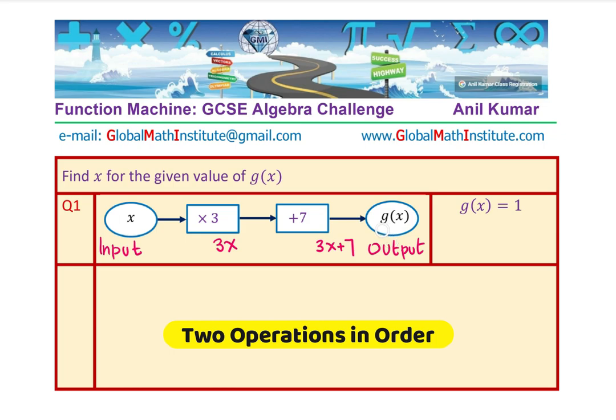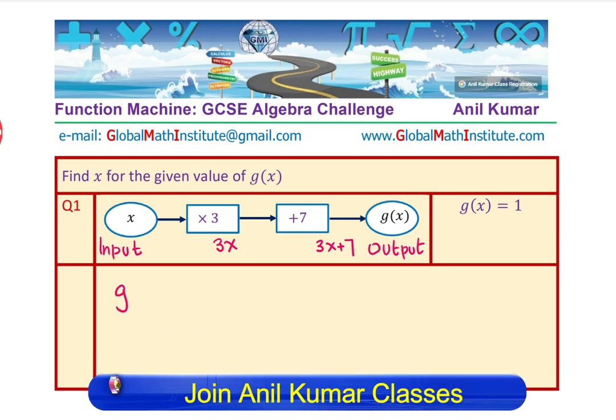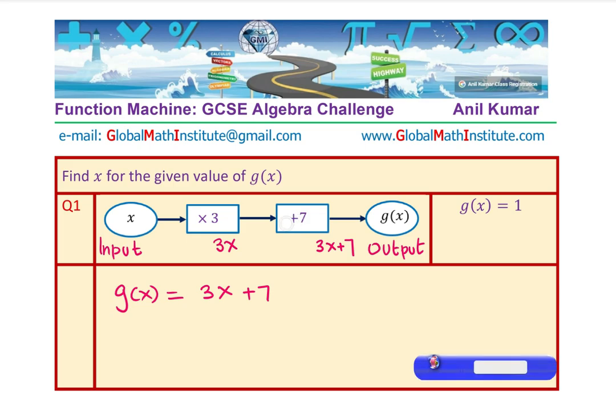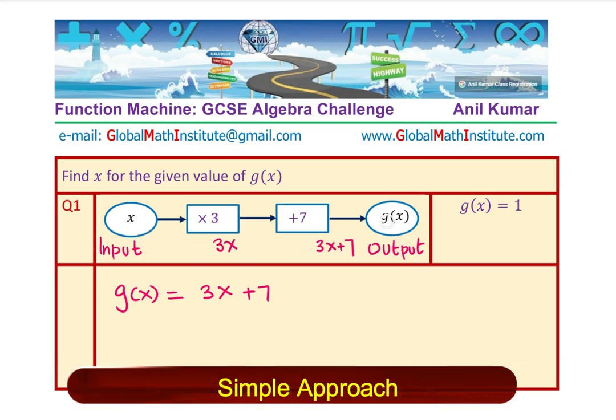And then, when you add 7, at that stage it becomes 3x plus 7 as the output. There are two operations being performed on x which results into the output which is written in function notation as g(x). Normally, you had been writing this as y. We could write this function g(x) equals 3 times the input plus 7. After these two simpler functions operations, these are all broken down into smaller operations. And that becomes the complete function for the given function machine.